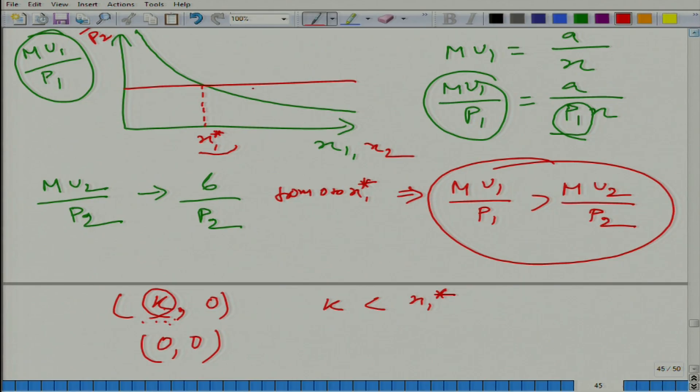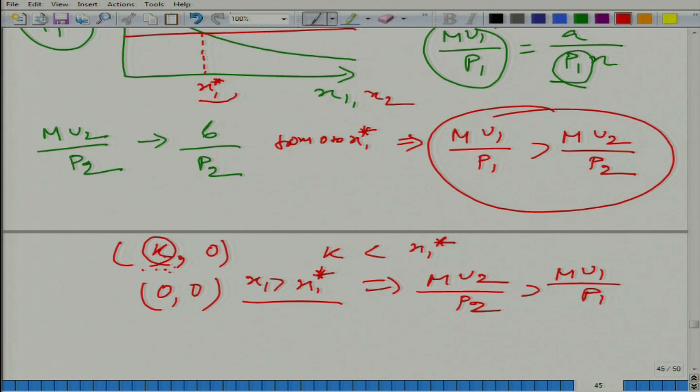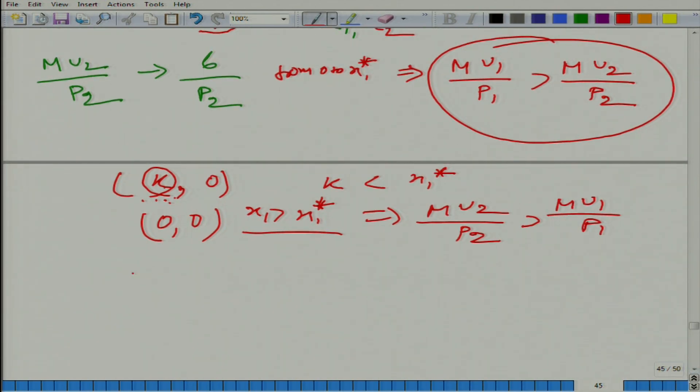But here, second condition, second situation is that he has, let us say, he has already bought x1 star amount of good 1 and he still has some money left. Now what is happening? That after, beyond this, beyond x1 greater than x1 star, mu2 divided by p2 is always greater than mu1 divided by p1. So it means that once he reaches to the level of x1 star, he would no longer buy any more of good 1, and he will start buying good 2. So what is happening here? This is a very nice situation if you understand it. He has income, what he does: he starts buying good 1 and he keeps on buying good 1 till he reaches x1 star.